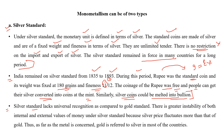जो silver standard था उसको universal recognition — दुनिया भर में पहचान नहीं मिला, जैसे gold standard को मिला। दूसरी सबसे बड़ी समस्या यह थी कि greater instability of both internal and external values of money under silver standard — क्योंकि silver की prices, gold की prices से ज़ादा fluctuate करती थी। Gold की comparatively prices कम fluctuate करेंगी बजाए silver के, तो international market में बहुत ज़ादा internal और external instability हो जाती थी। Thus, as far as metal is concerned, gold is preferred to silver in most of the countries।